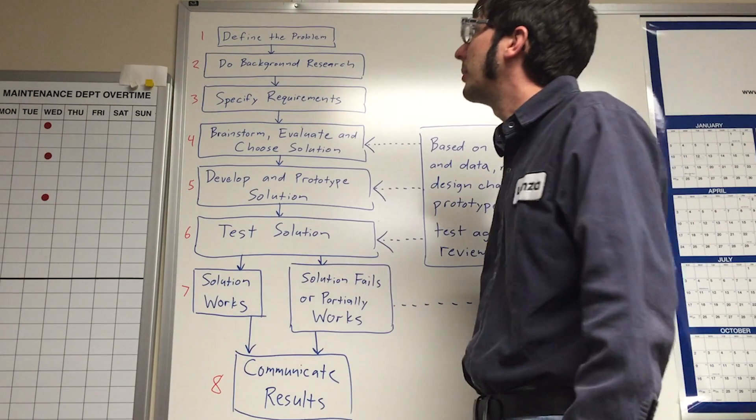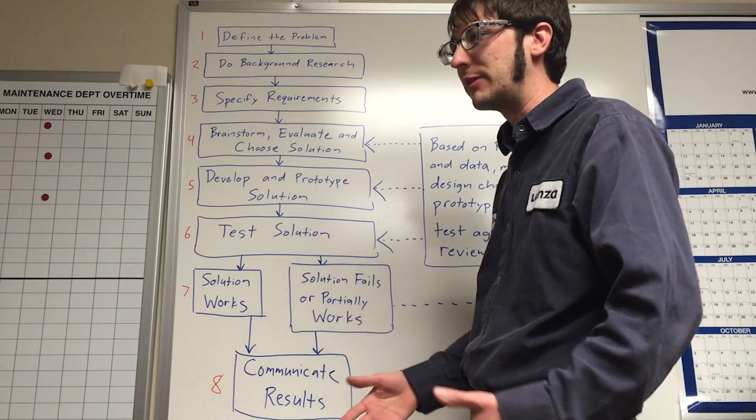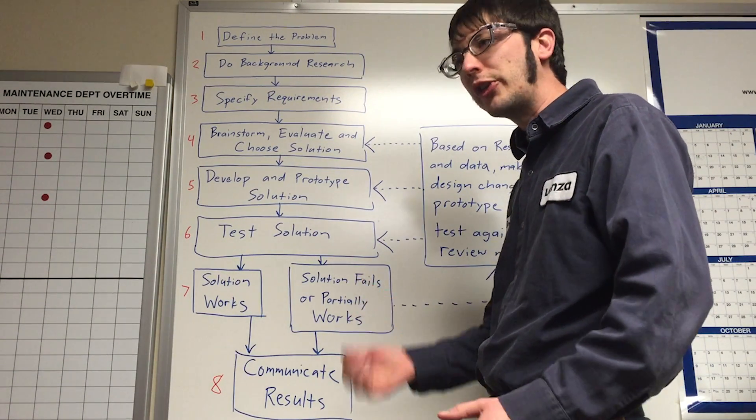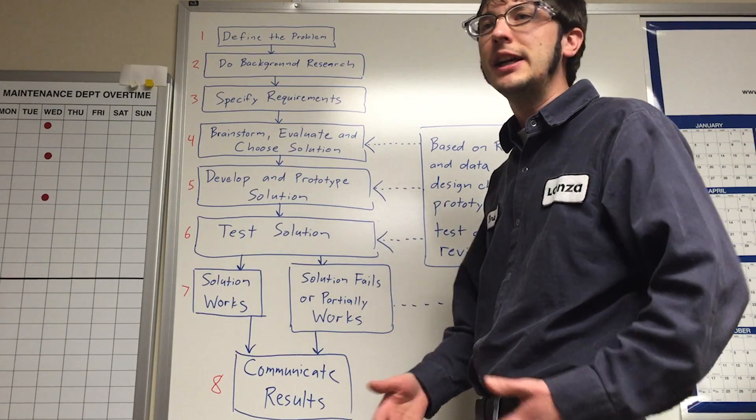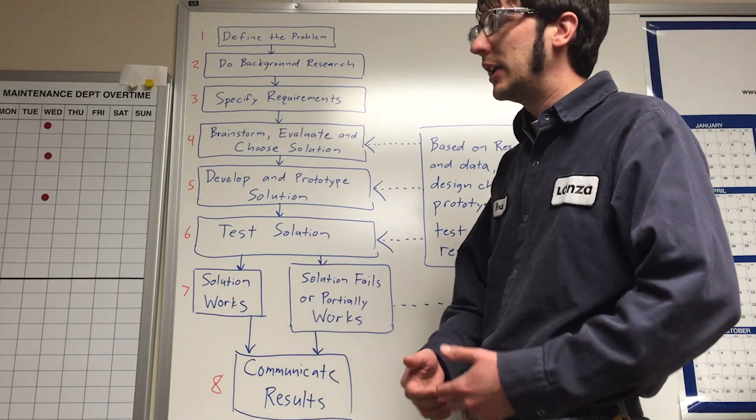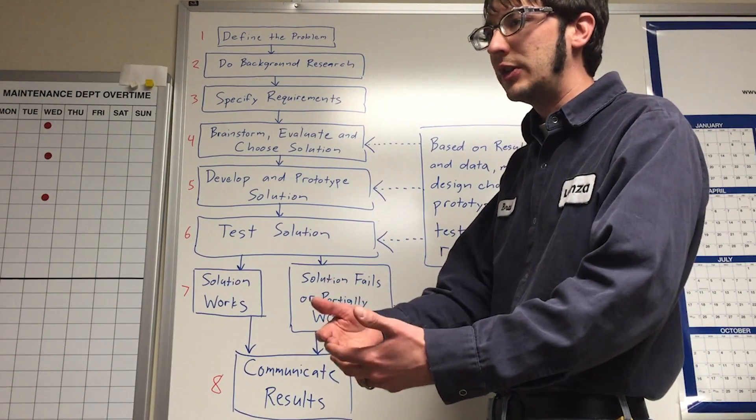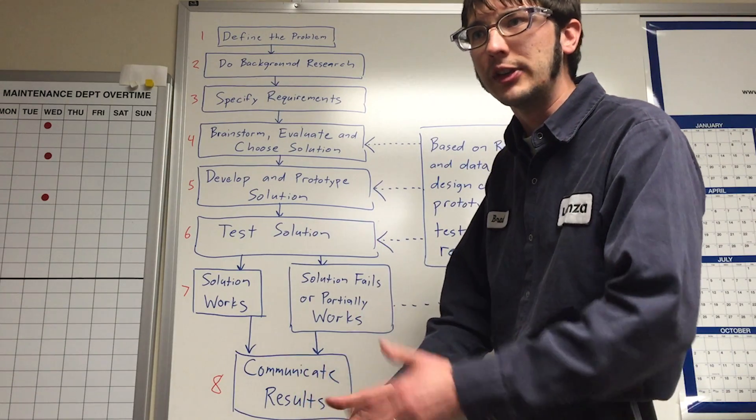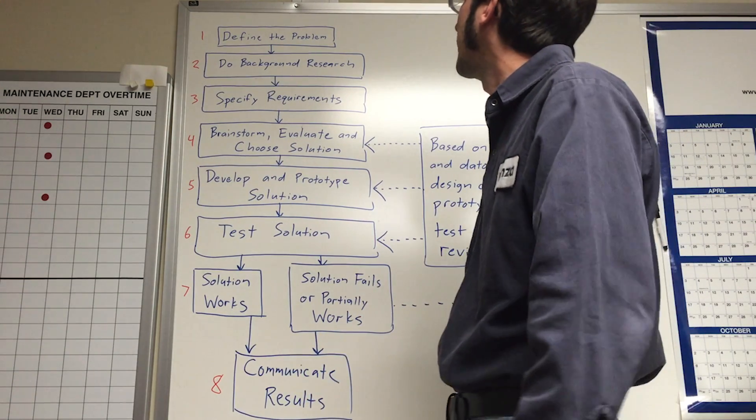Step one is define the problem. That's nothing more than a brief statement of exactly what's wrong. Also good to define criticality. Is it a safety issue? Is the problem causing an issue that has production down for some reason? That would get included into the problem statement as well.